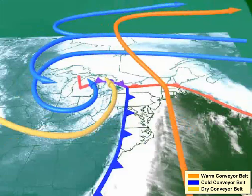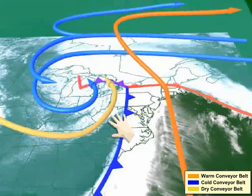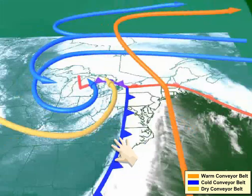Let's use this schematic to get a feel for the spatial orientation of the conveyor belts associated with a mature mid-latitude low-pressure system. The warm conveyor belt is marked in orange, the cold conveyor belt is marked in blue, and the dry conveyor belt is marked in yellow. They've been drawn over this satellite image of a mature mid-latitude cyclone, with the surface fronts drawn in too, so that you can get your bearings.